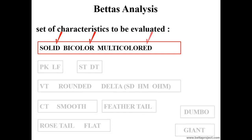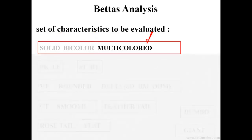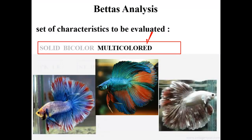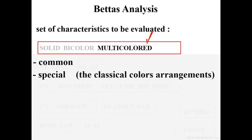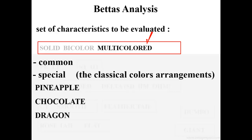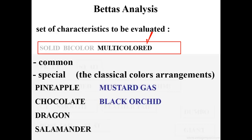Now let us talk about the multicolored BETAs. Within this subgroup, we can consider two categories: those with any color distribution in the phenotype — the so-called common multicolored — and those with well-defined colors and known arrangements, the special ones, which have arisen with high frequency in many selection works and settled over time. These classical color arrangements are: pineapple, chocolate, dragon (all kinds), salamander (all kinds), mustard gas, black orchid, black devil, black copper, and red gold.